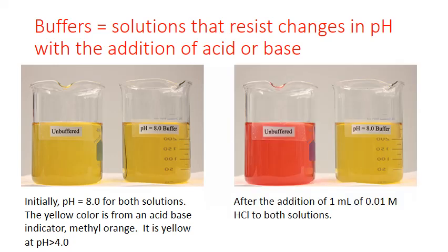Now in this next picture, we've added a small amount of dilute hydrochloric acid to each beaker — one milliliter of 0.01 molar hydrochloric, to be exact. Notice what happened to the unbuffered solution. The addition of a small amount of acid resulted in a drastic change in pH. It's dropped from 8.0 to below 4, showing the characteristic color change of methyl orange to red. The buffered solution, on the other hand, has remained basic. The addition of acid doesn't appear to have shifted the pH that much at all, and this is the power of a buffer — it resists changes in pH with the addition of extra acids and bases.